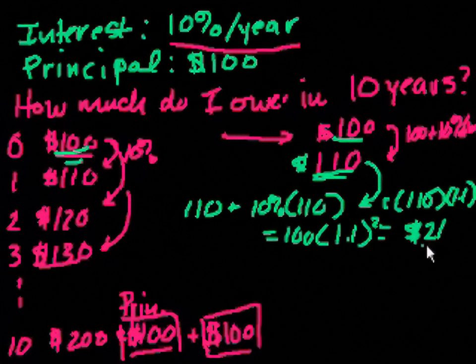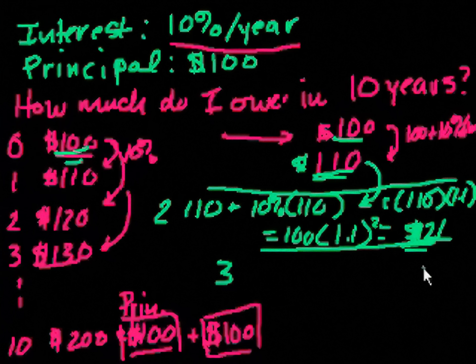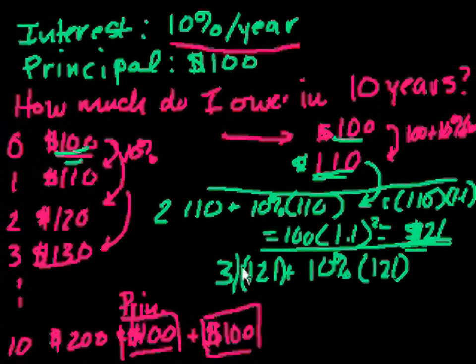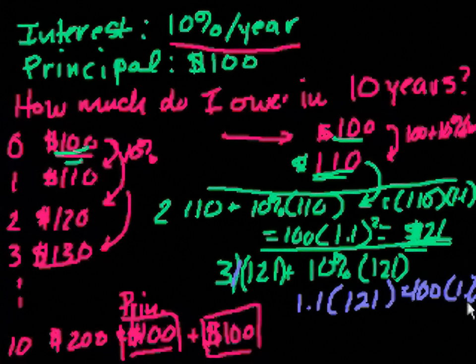And then in year two, this is my new principal, this is $121. And now in year three, I'm going to have to pay the $121 that I owed at the end of year two plus 10% times the amount of money I owed going into the year, $121. And so that's the same thing. We could put parentheses around here. So that's the same thing as 1 times 121 plus 0.1 times 121. So that's the same thing as 1.1 times 121. Or another way of viewing it, that's equal to our original principal times 1.1 to the third power.